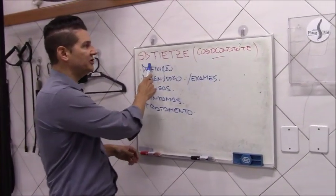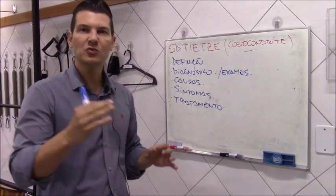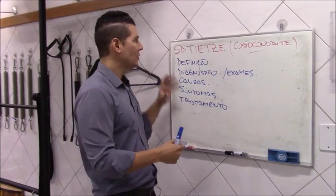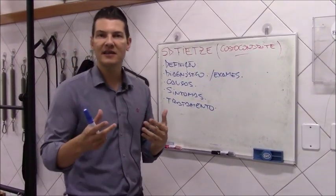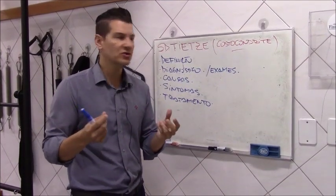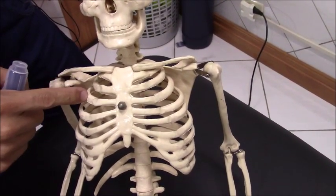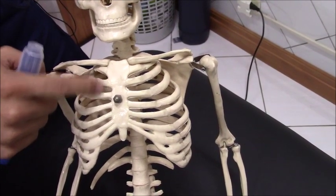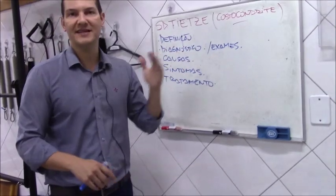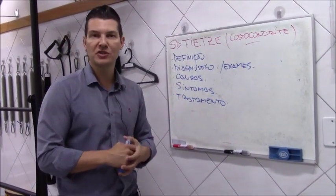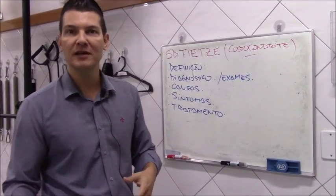A gente vai falar sobre a síndrome de Tietze, muito conhecida também por algumas pessoas como costocondrite, mas elas têm algumas nuances de diferença de uma para a outra. A síndrome de Tietze, por definição, é uma inflamação na cartilagem que interliga as costelas com o esterno. Esse nome veio pela descoberta de um cirurgião alemão em 1921, que acabou dando o nome da síndrome ao sobrenome dele.